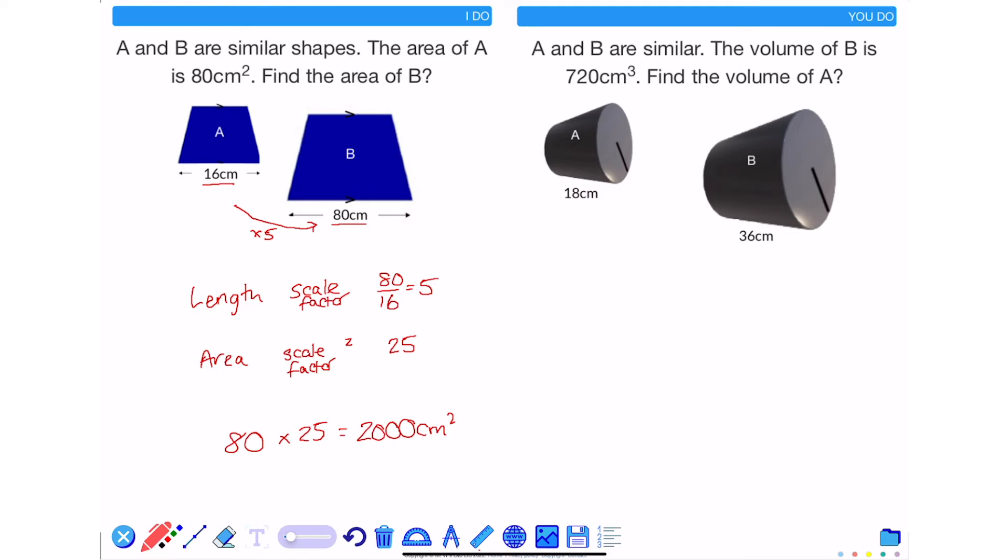As we saw in the example on the left hand side, a length will always have a scale factor. To calculate the scale factor, 36 divided by 18 is 2. So I know that shape B is 2 times bigger than shape A.